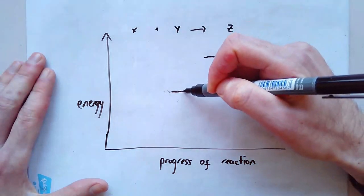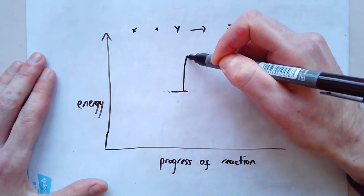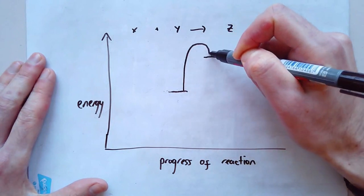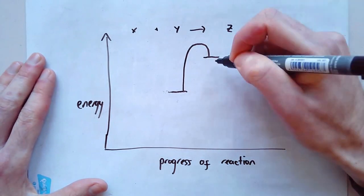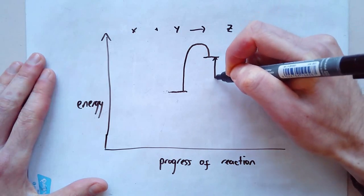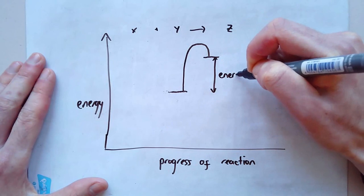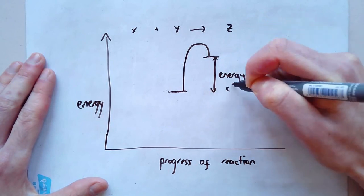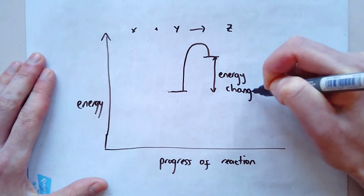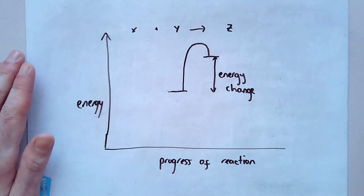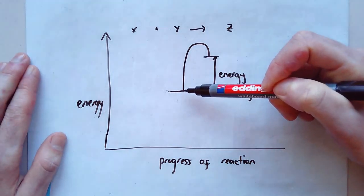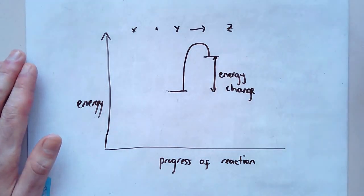And I'll draw my line again. And this time it goes all the way up to here and then down. This bit here represents the energy change. In this case, that's taken in. So we start off with only a little bit of energy. We end up with a lot. So we have to take that energy in from somewhere.